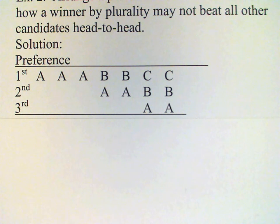So in that case, B would be able to beat every other candidate head-to-head, but yet A would win the election under the plurality method. And that would violate Condorcet's Criterion.